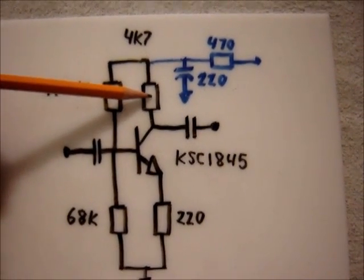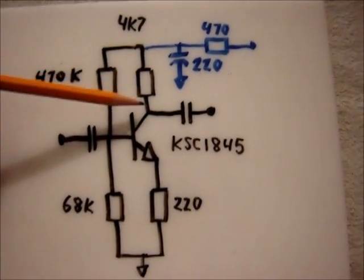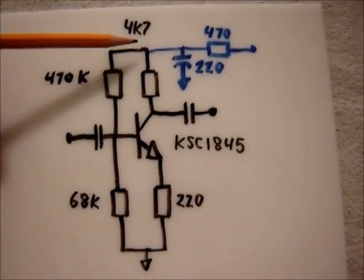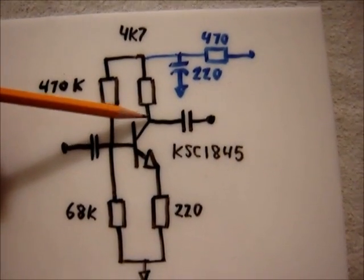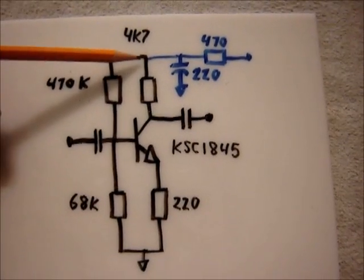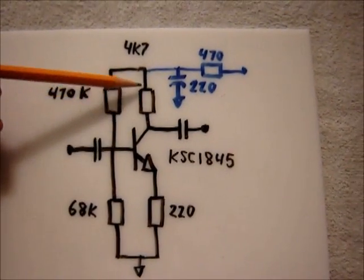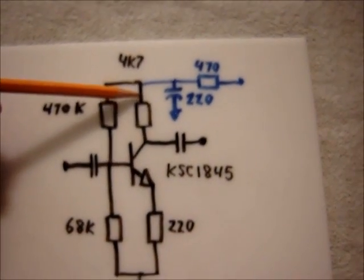Now the collector side resistor, that's important because if I took this out, I would get no signal in the output because essentially the collector would be connected to the supply. When current passes through a resistor, it converts it into a voltage.